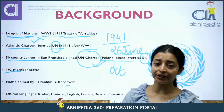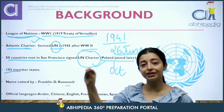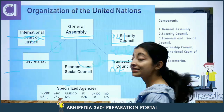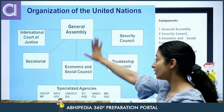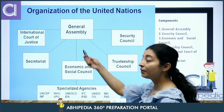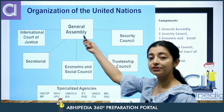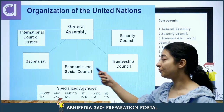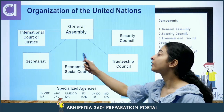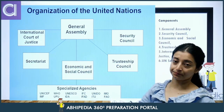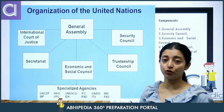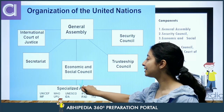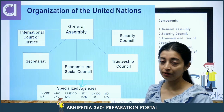Let's talk about the United Nations' main organs. There are 6 main organs: General Assembly, Security Council, Trusteeship Council, Economic and Social Council (ECOSOC), Secretariat, and ICJ — the International Court of Justice. Under the Economic and Social Council, all the specialized agencies of the UN work.